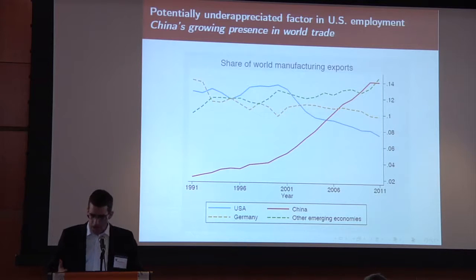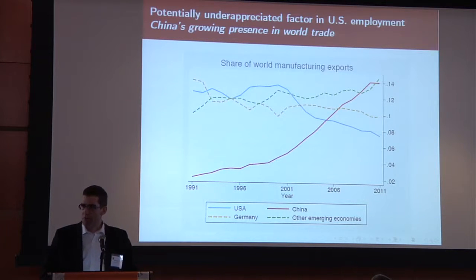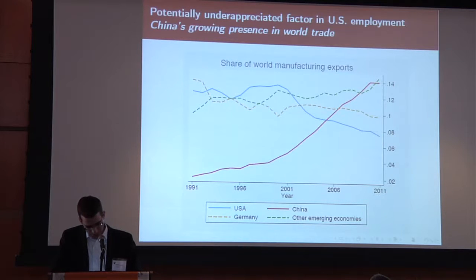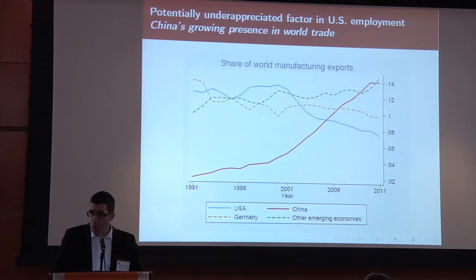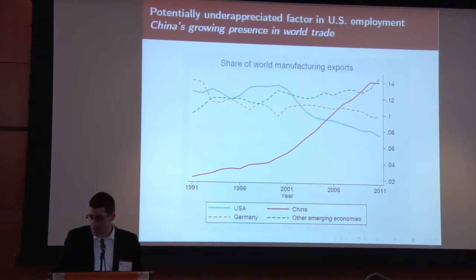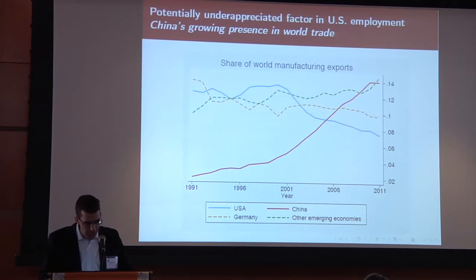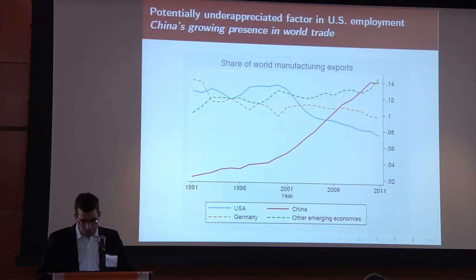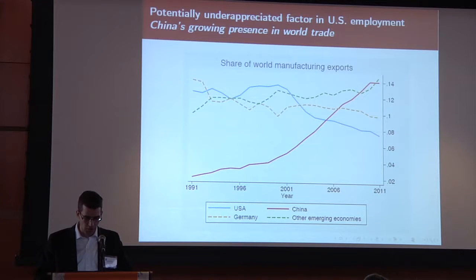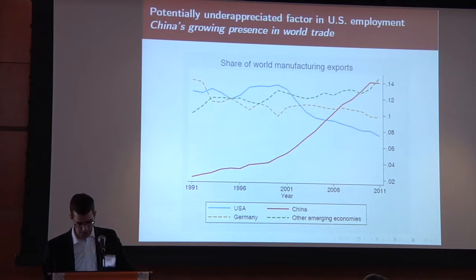Given that an important fraction of the decline in employment seems to be in manufacturing, we're exploring in this paper the contribution of one potential source of such an employment change, which comes from international trade. The big change in international trade patterns in the last two decades was the very rapid emergence of China as a major exporting power.